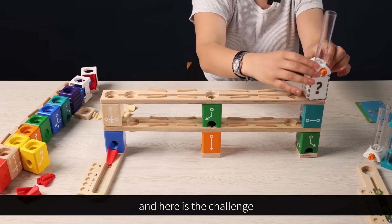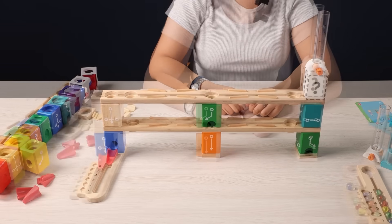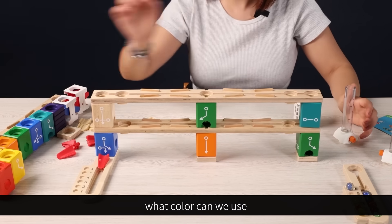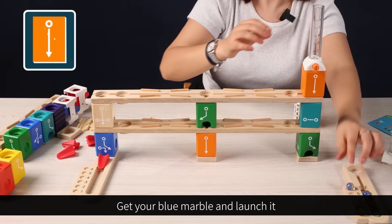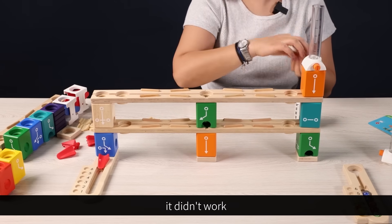And here is the challenge. What should the secret block be? To try this challenge, let's see what colors we can use. First, let's go with the orange one. Get your blue marble and launch it. Oops, it didn't work.